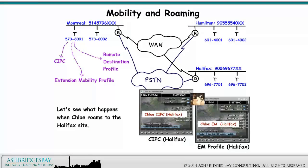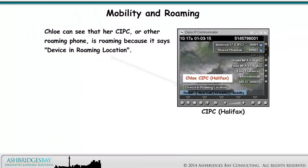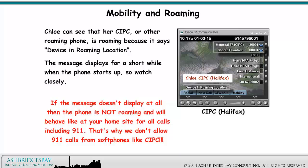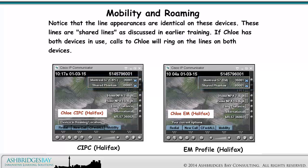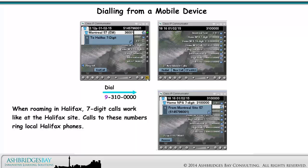Let's see what happens when Chloe roams to the Halifax site. Chloe can see that her CIPC or other roaming phone is roaming because it says Device in Roaming Location. The message displays for a short while when the phone starts up, so watch closely. If the message doesn't display at all, the phone is not roaming and will behave like at your home site for all calls, including 911. That's why we don't allow 911 calls from soft phones like CIPC. The line appearances are identical on these devices — these are shared lines. If Chloe has both devices in use, calls to Chloe will ring on both. When roaming in Halifax, 7-digit calls work like at the Halifax site, and calls to those numbers ring local Halifax phones.